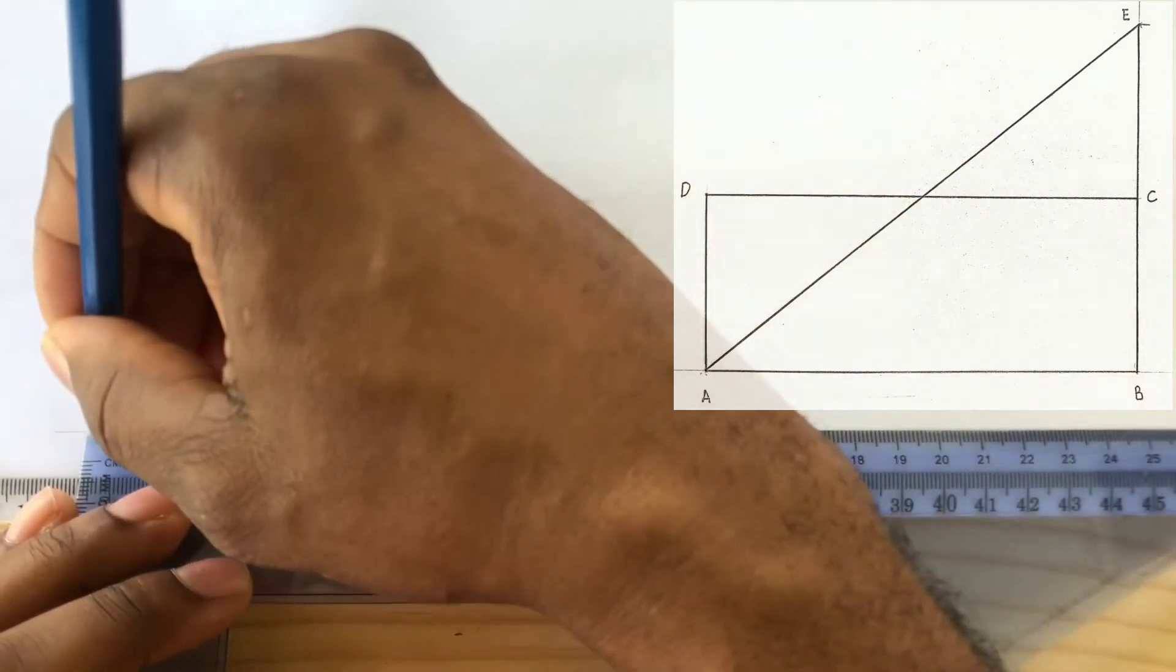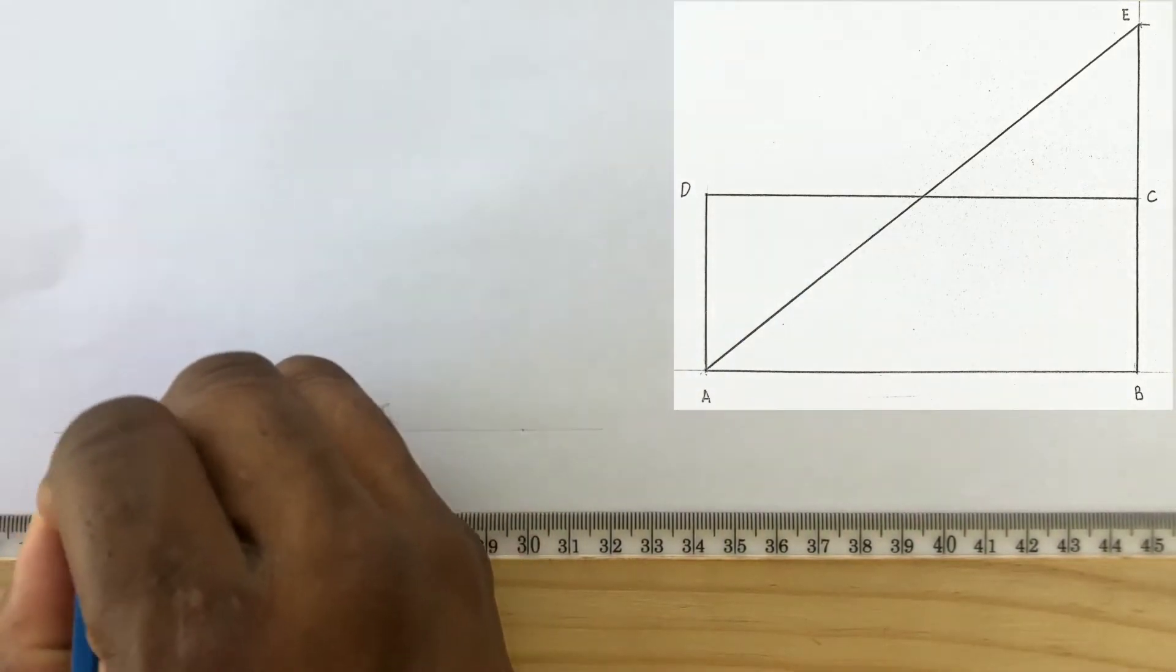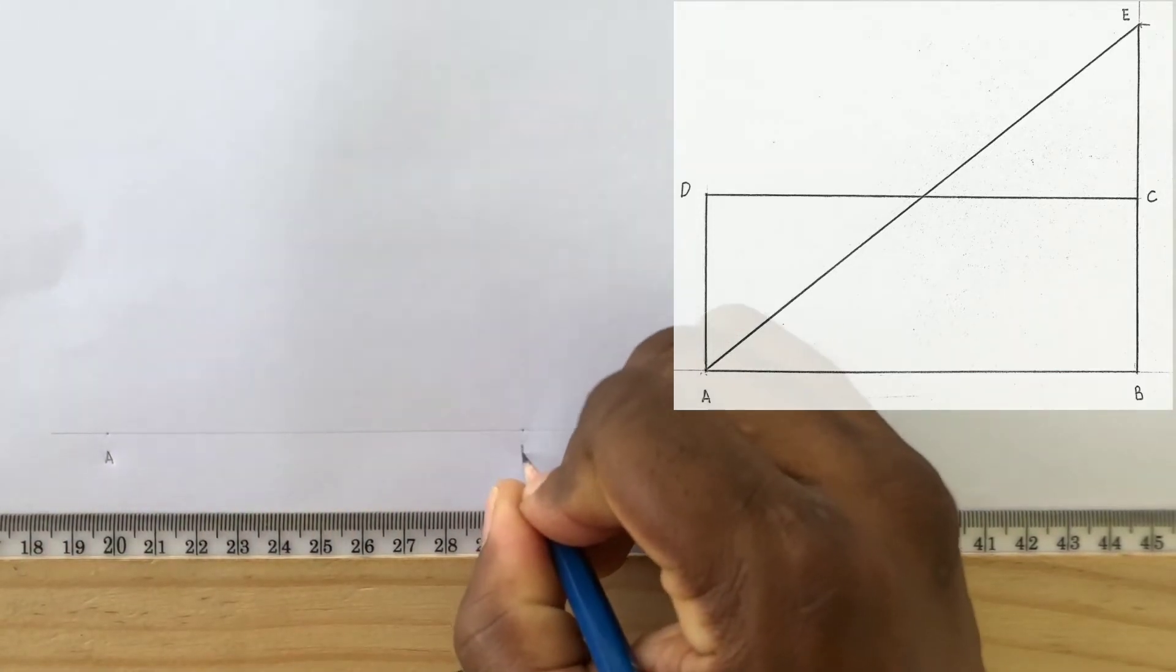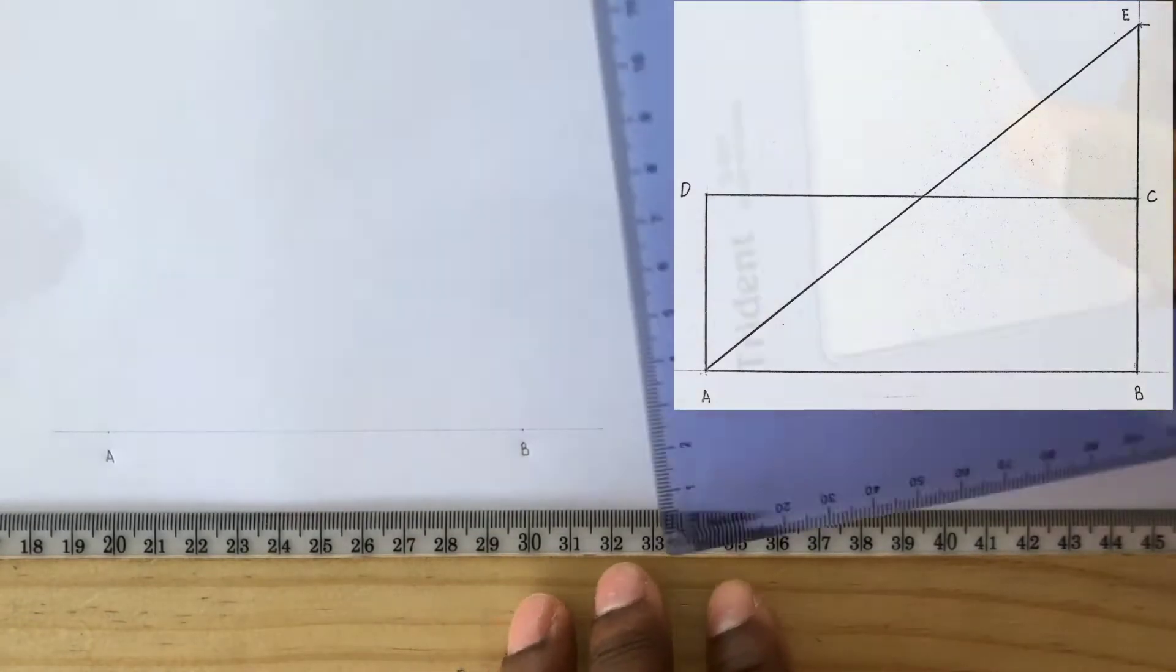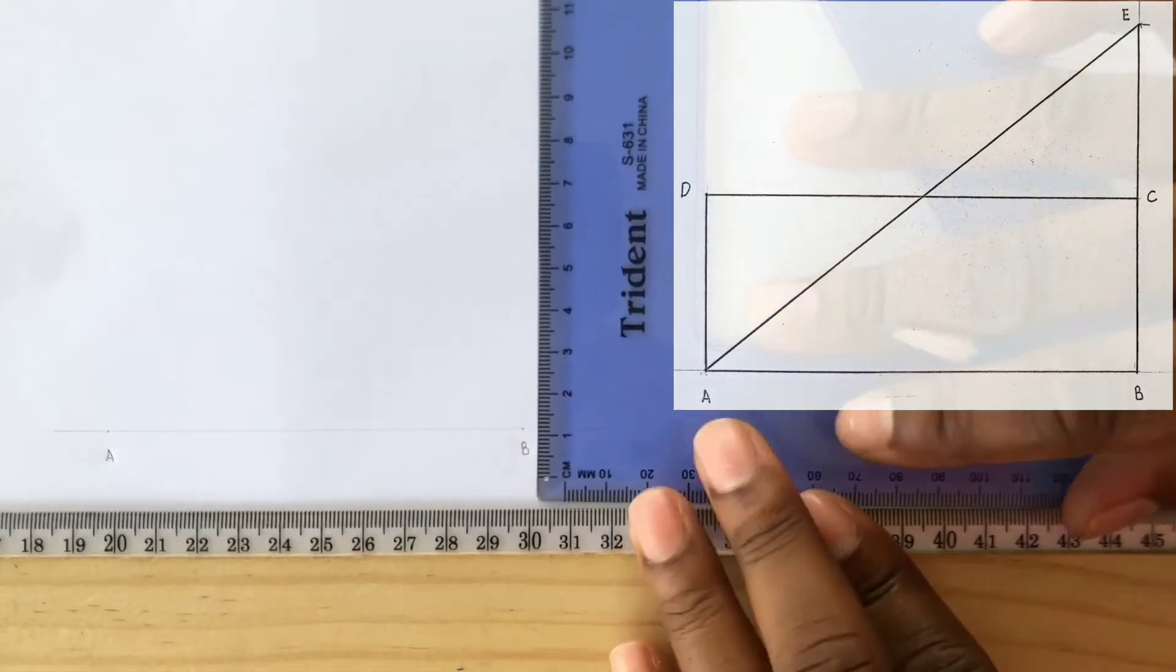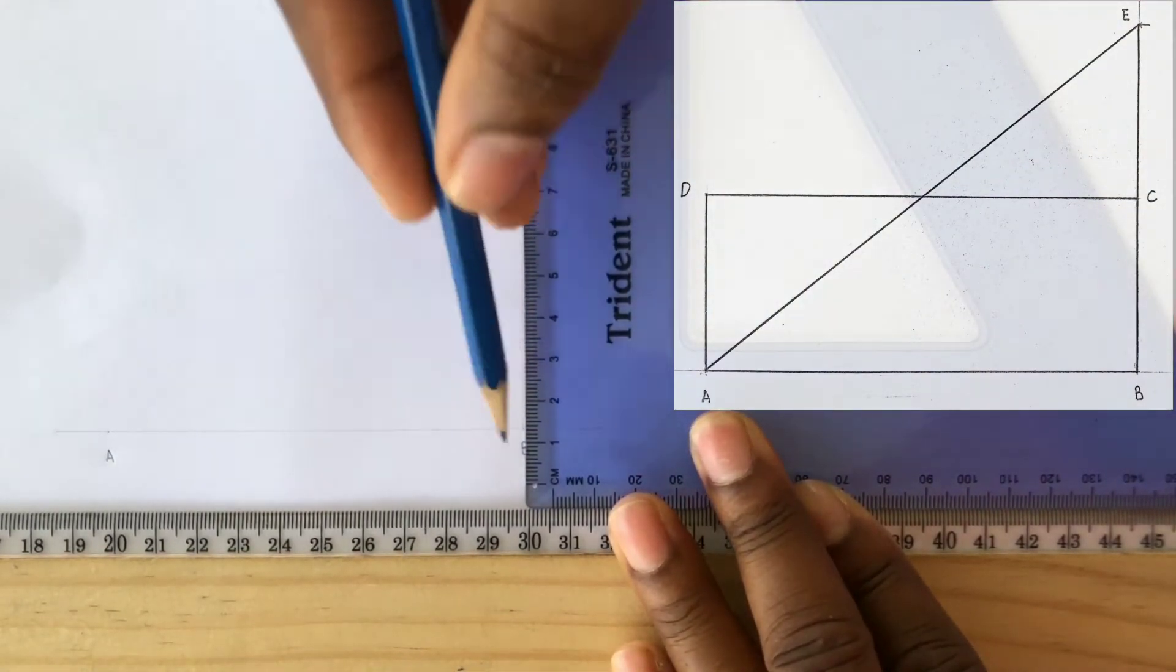This is our required length. Label the points A and B. You will now draw perpendicular lines using your set square and your T-square from point A and point B. The line drawn at point B will be taller than the line drawn from A.